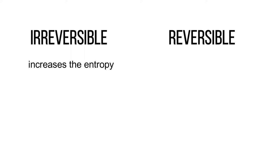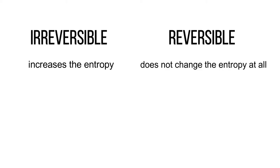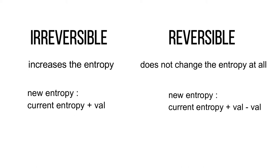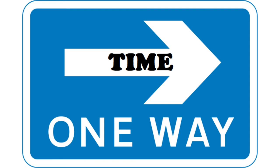Any process that is reversible, like the opening and closing of a door, does not change the entropy at all — or we can say it contributes a positive and a negative change, while an irreversible process can only contribute a positive change. This makes entropy always go in one direction: to increase. Because of this property, entropy is also known as the arrow of time, because it denotes the flow of time itself.